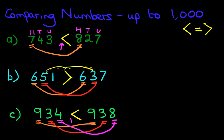So now it reads 934 is less than or smaller than 938. Always make sure that it points to the smaller number. And that is how we compare numbers up to 1,000 simply by looking at the digits one by one. Remember, always start with a digit on the left-hand side first and gradually move inwards if required.